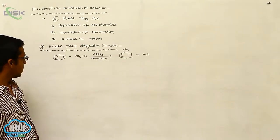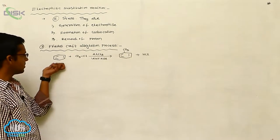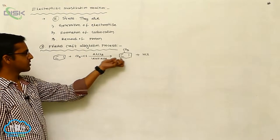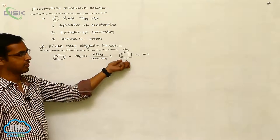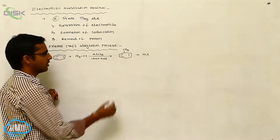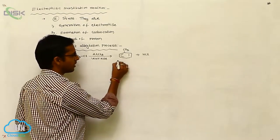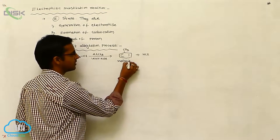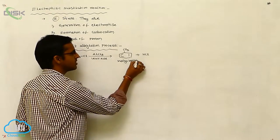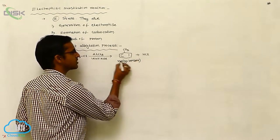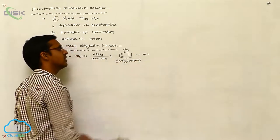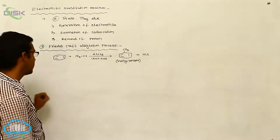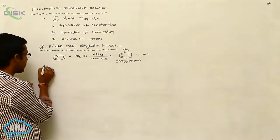For example, benzene is reacted with methyl chloride in the presence of a Lewis acid to produce methyl benzene. This product is commonly called toluene — when a CH₃ group is present on the benzene ring, the compound is called toluene or methyl benzene. Now let's see the mechanism.